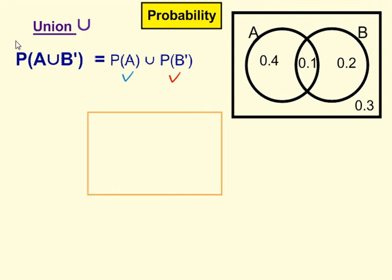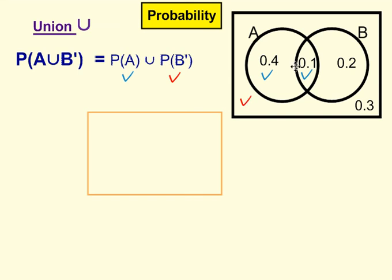Let's look at another example. This time we've got A union with not B. We're going to follow the exact same steps, so we're going to split it up: probability of A union probability of not B. Let's first of all tick everywhere that we've got an A — so A is here and here. And not B — well, it's not B outside of this circle, and it's also not B in this region here. So we're going to tick that area.